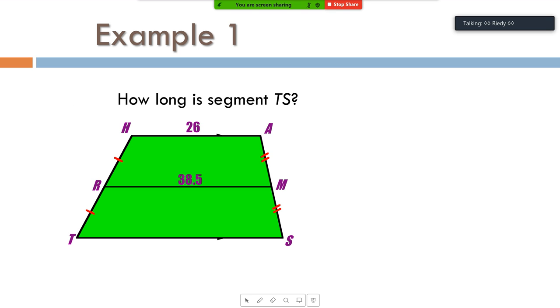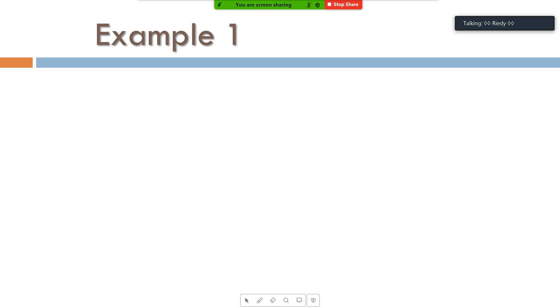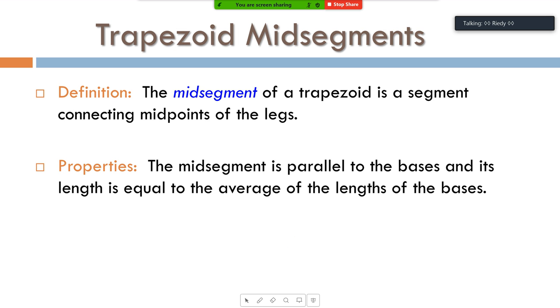Okay, so there's a mid-segment. RM, raccoon mongoose, is a mid-segment. So, R is the midpoint of HT. M is the midpoint of AS. And when you connect it, you get a mid-segment. Okay, so that's what it looks like. Now, the important part is what the properties are in that second statement. Understanding what it is is one thing. But then it's got this weird property that its length is the average of the two bases. And once you get that done, we'll go back to the example, and I'll show you what that looks like numerically.